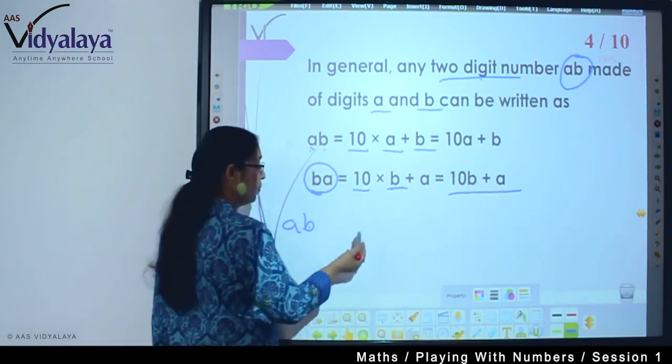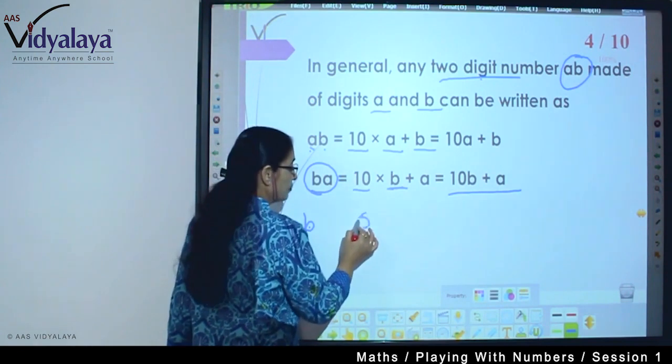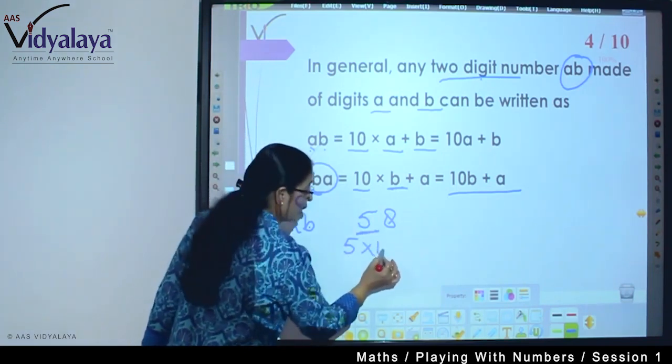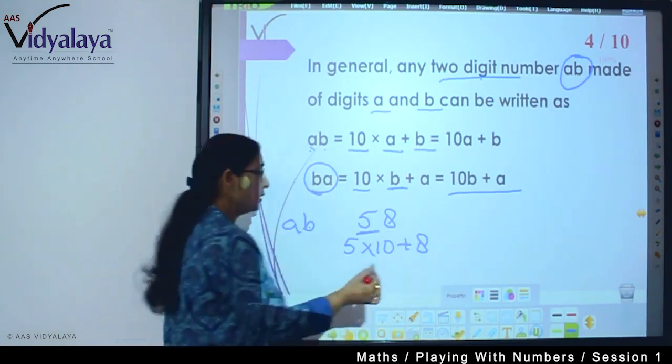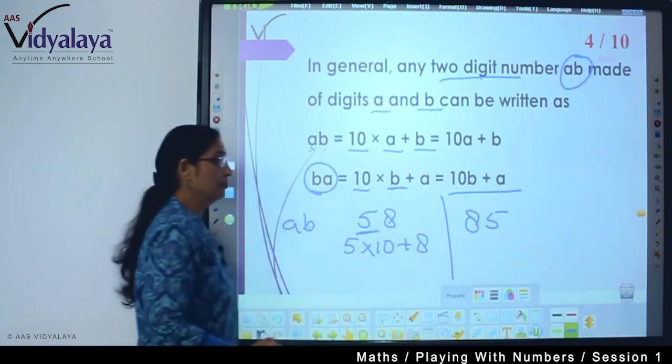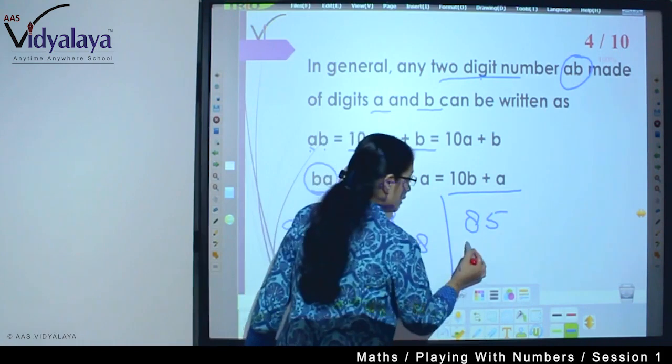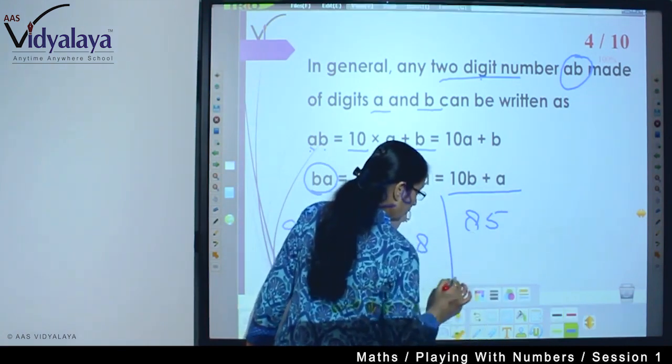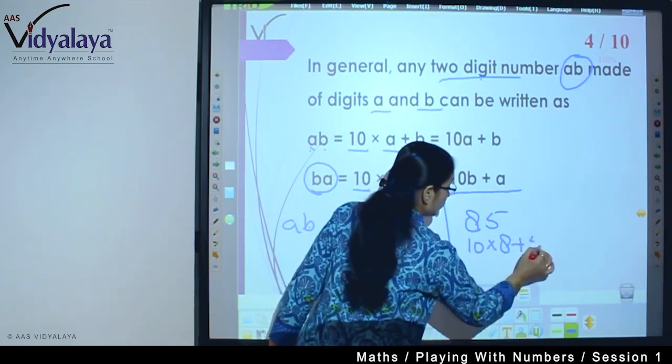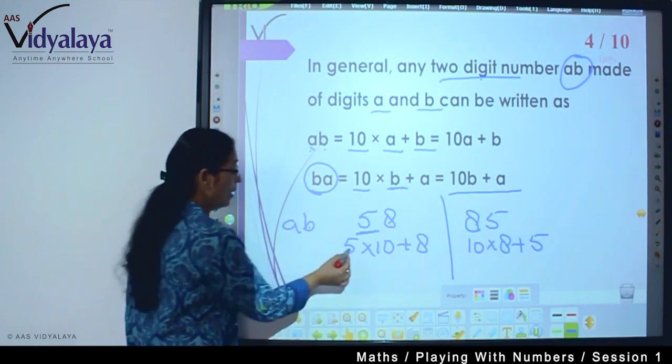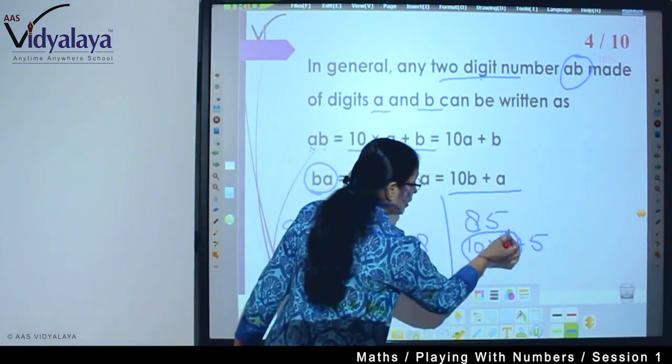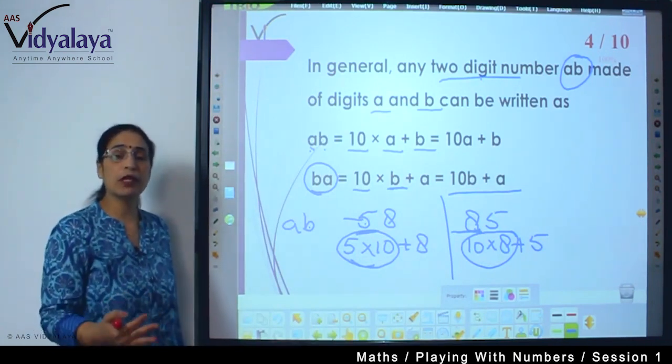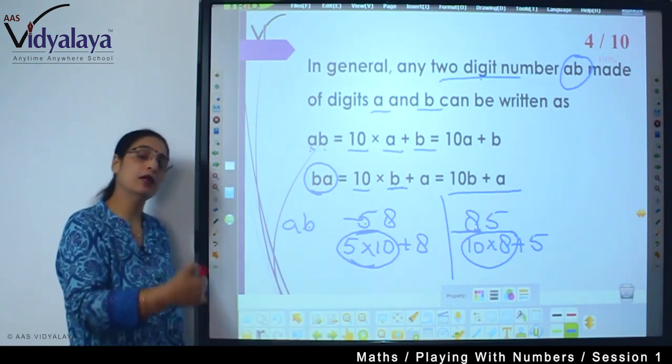But if I do the reverse, instead of ab I write ba, so at 10 place it will be b plus a, so 10b plus a. So if we take the example, suppose we take fifty eight, so 5 is at 10 place, so we can write 5 into 10 plus 8. But if I write 85, 85 means we can write 10 into 8 plus 5. Here 5 was getting multiplied by 10, here 8 is getting multiplied by 10. Because at 10's place it is 5 and here at 10's place it is 8. So if the place value concept is clear, for any number if it is there we can write it.